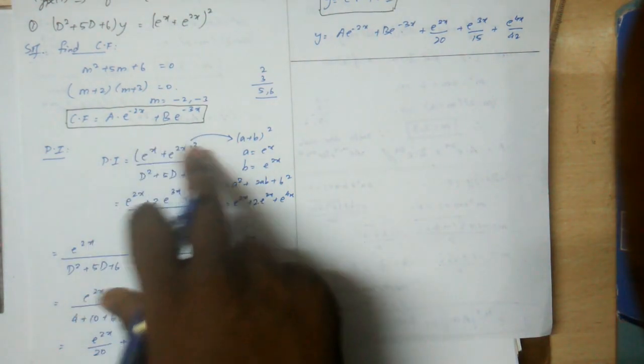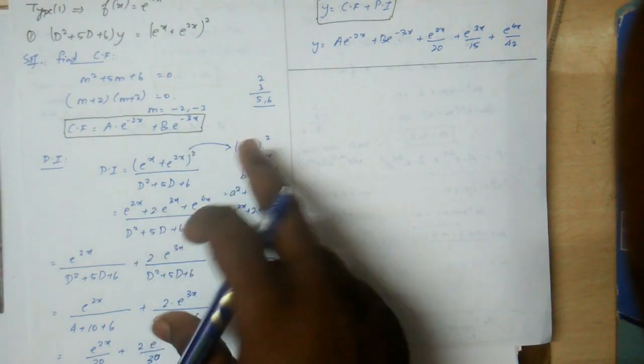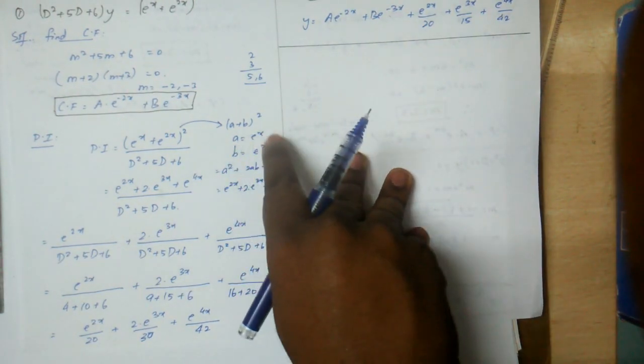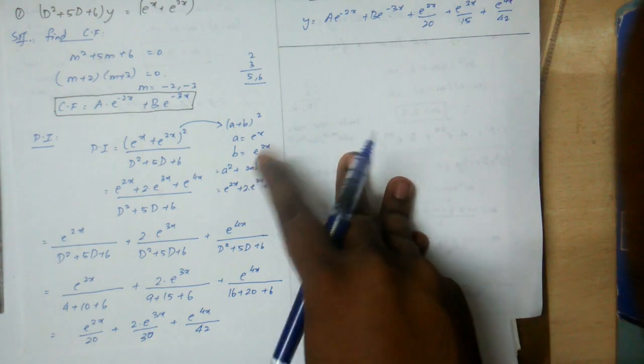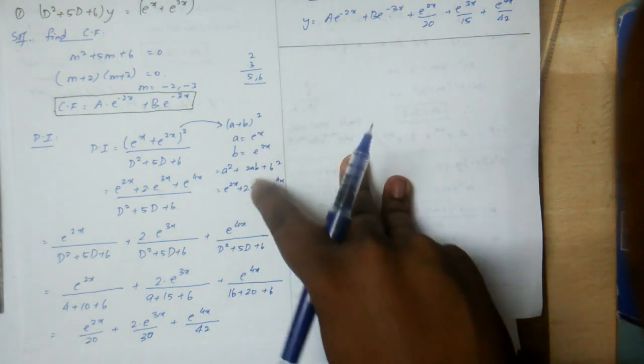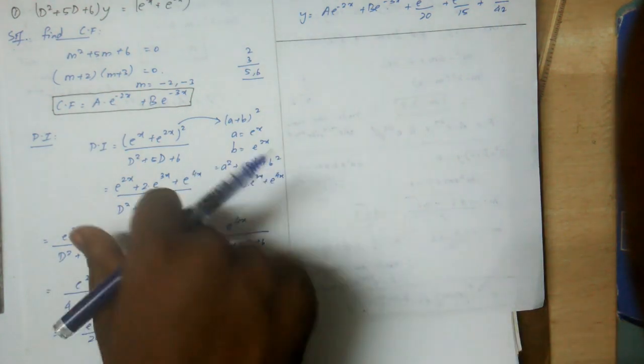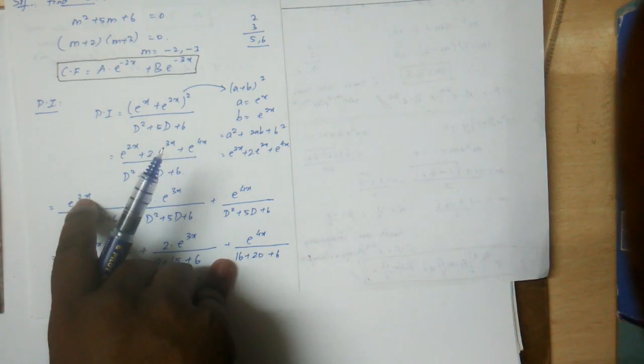For the particular integral: f(x)/(D² + 5D + 6) where f(x) = e^x + e^(2x) squared. We can expand this as (e^x + e^(2x))². Using (a+b)² = a² + 2ab + b², we get e^(2x) + 2AB = e^x and e^(4x) terms.